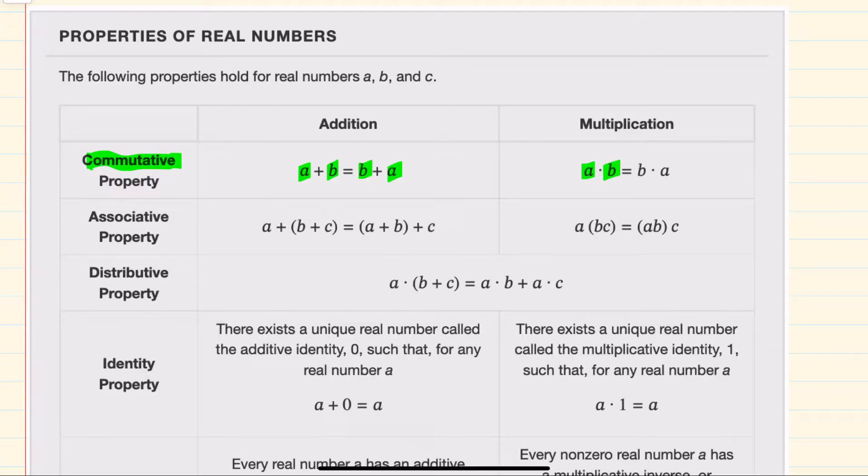And the same is true for multiplication. I can multiply two values in any order. For the associative property, looking first at addition, if three numbers are being added, I can add in any order. So I could add the second and third first, or I could add the first and second first. So my addition can be grouped in any order.